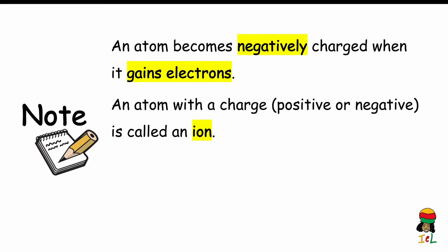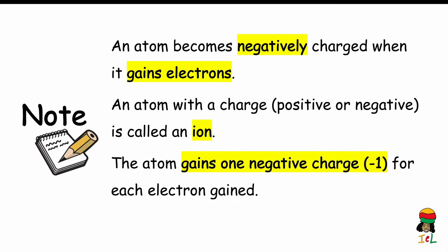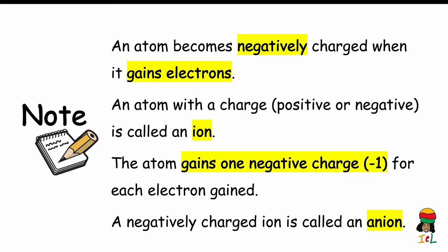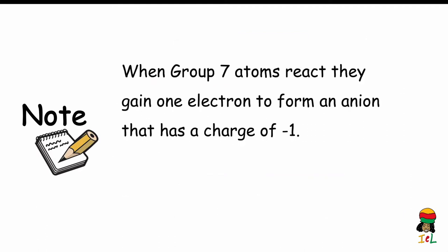Note that an atom becomes negatively charged when it gains electrons. An atom with a charge — whether positive or negative — is called an ion. The atom gains one negative charge, that is a minus one charge, for each electron gained. A negatively charged ion is called an anion. Therefore, when Group 7 atoms react, they gain one electron to form an anion with a charge of negative 1.